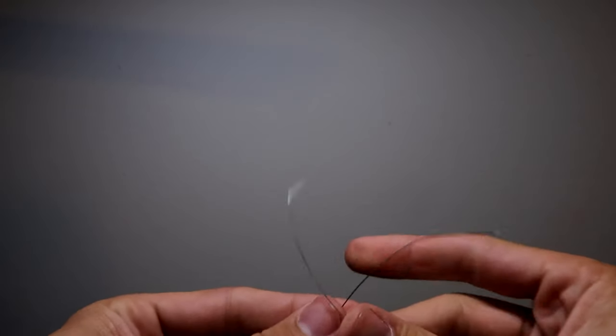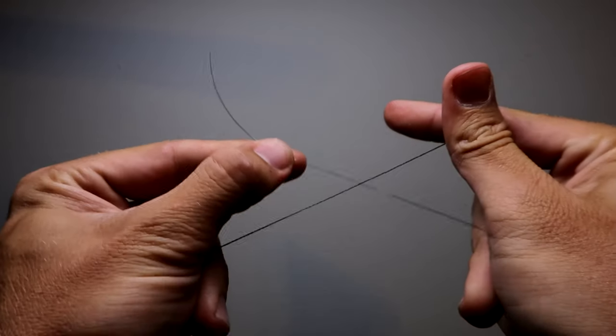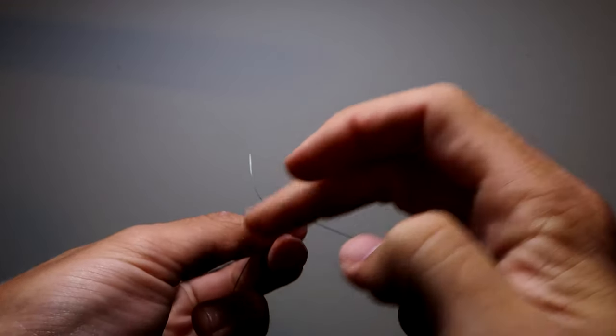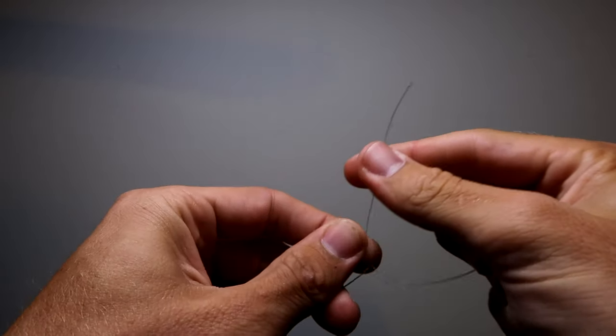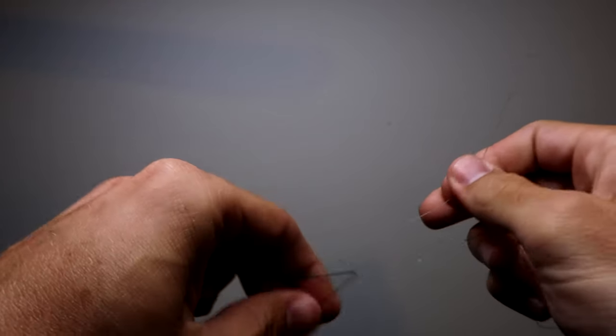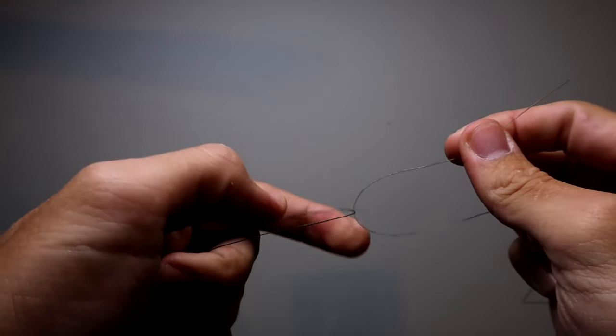So I'm going to create an X with my lines here, and then I'm going to wrap the braided line over the monofilament line and pull that monofilament line towards me to attach them both together.